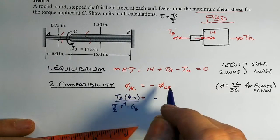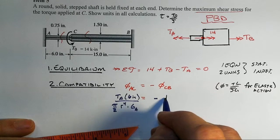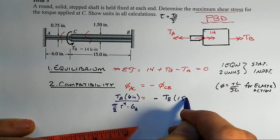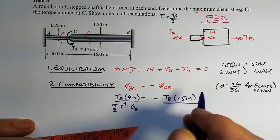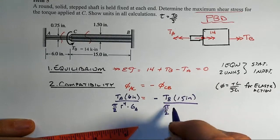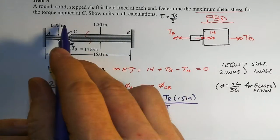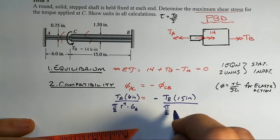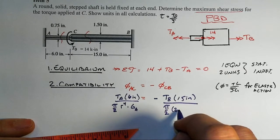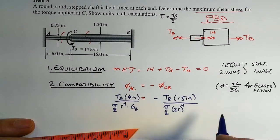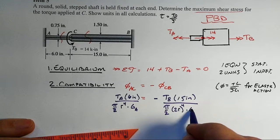Then minus, minus sign is important, times TB. We've got a 15-inch length on the right-hand segment. Again, pi over 2, but we have twice the radius, 1.5 versus 0.75 of the diameters. Twice the radius to the 4th power times GB.